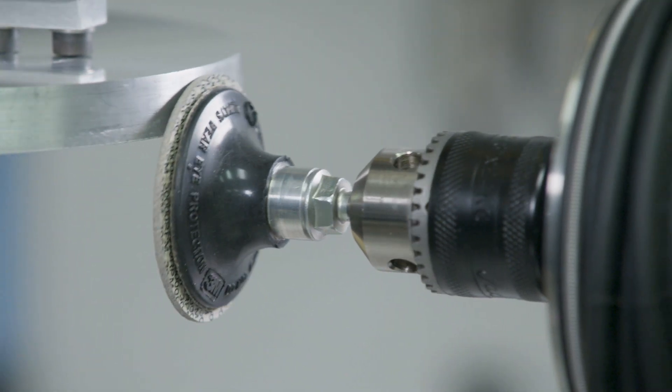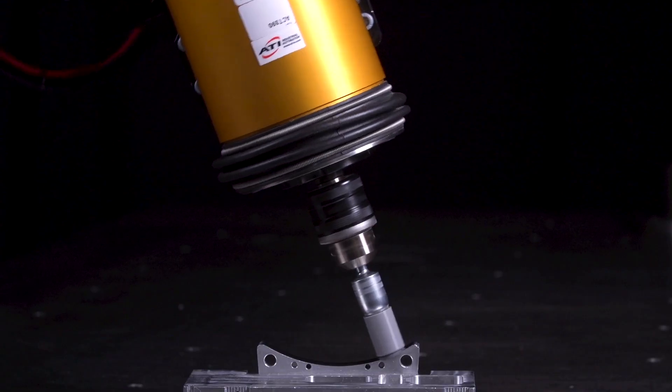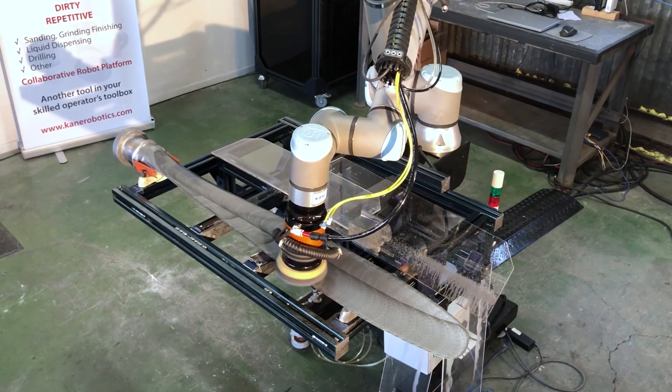In terms of the products we offer, there's three main ways that you can classify our products. The first are our axial compliant finishing tools which accomplish a lot of what you'd expect from brushes, sanding media, polishing, the finer finishing.